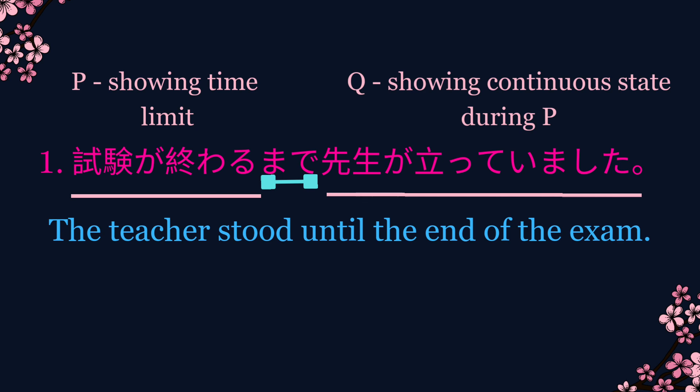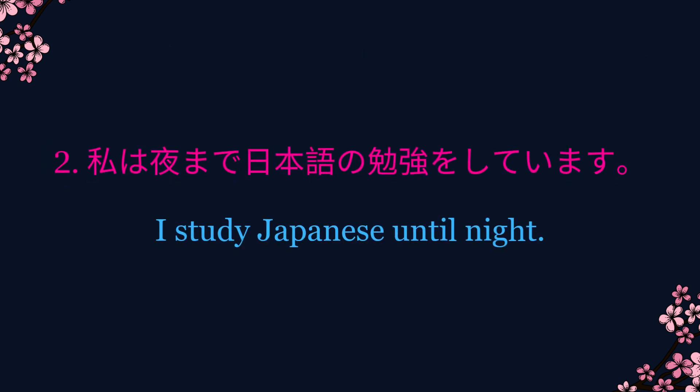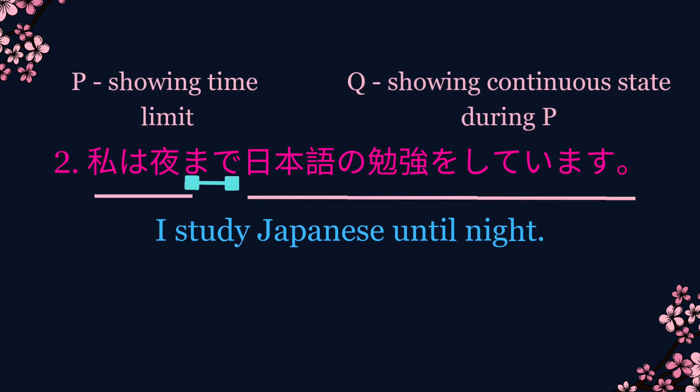Let's see two more examples. 私は夜まで日本語の勉強をしています。In this example, the speaker has continued studying till night. Here, part P is 'night' and part Q is 'studying Japanese'.